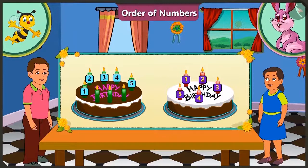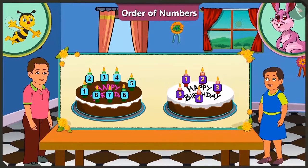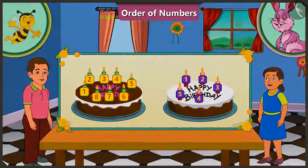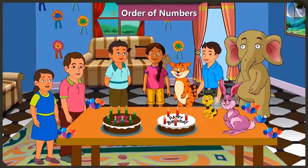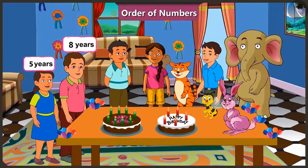So how many candles would Bunty have? Bunty will have 3 more candles. That makes 6, 7 and 8. Bunty has a total of 8 candles on his cake. This shows that Bunty is 8 years old and Bubbly is 5 years old.